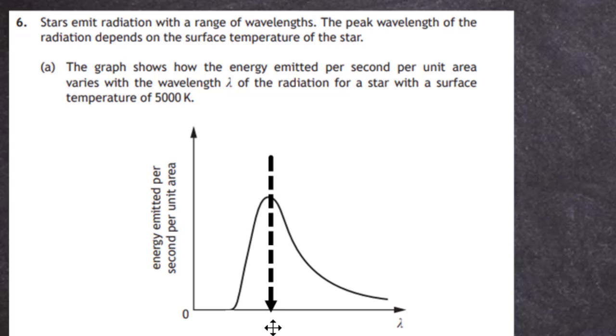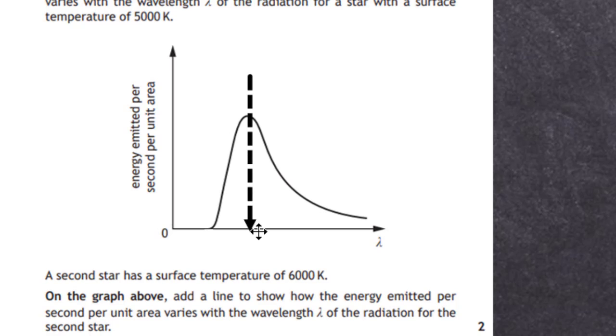The peak radiation emitted occurs at this wavelength here. Now we're told a second star has a surface temperature of 6000K, and on the graph above, in bold letters, it says add a line to show how the energy emitted per second per unit area varies with the wavelength lambda of the radiation of the second star. So really what we're doing is drawing the new black body radiation graph for the star at a higher temperature.